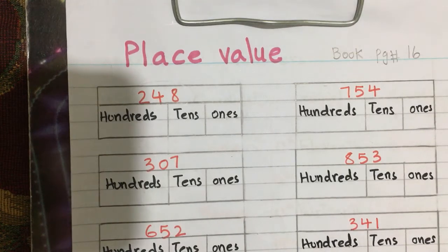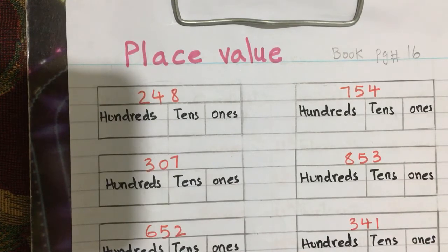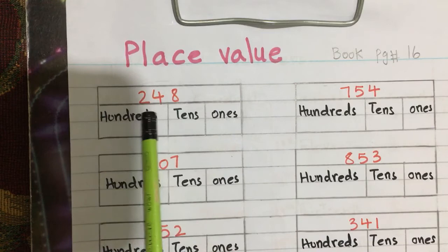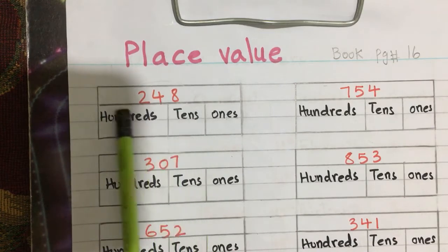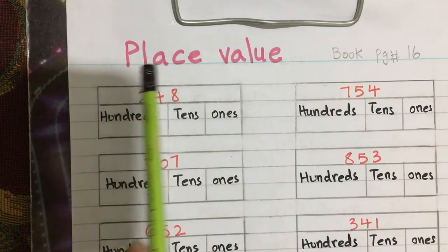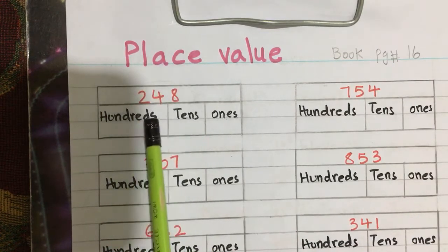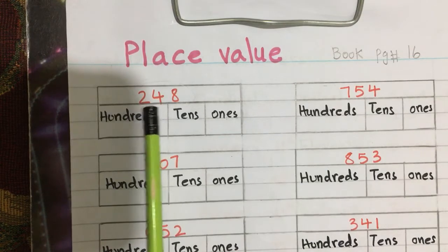Assalamu alaikum, Grade 2. Today our topic is place value, book page number 16. We will learn how we can read a big number. We can read a big number by giving place values.